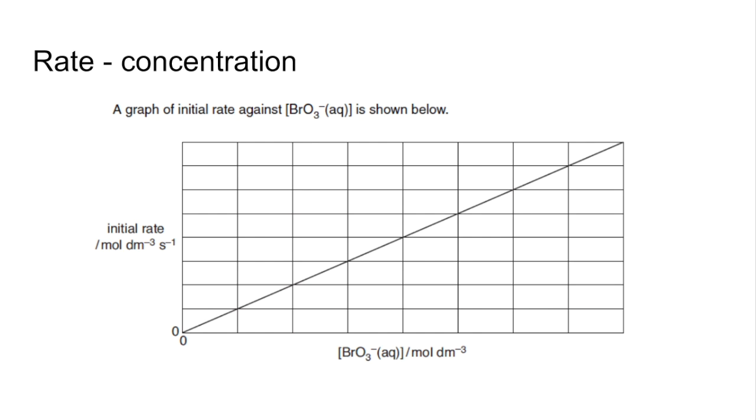So moving on to rate-concentration graphs now. So we've got a straight line graph starting at the origin. So the rate is proportional to the concentration. So this must be first order.